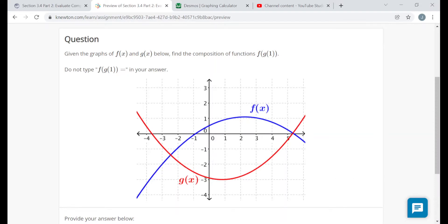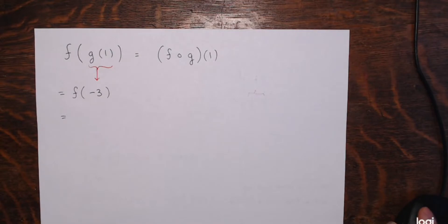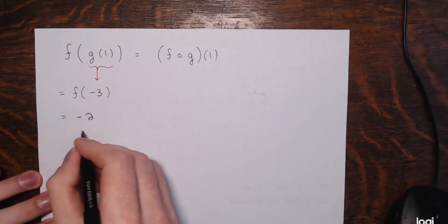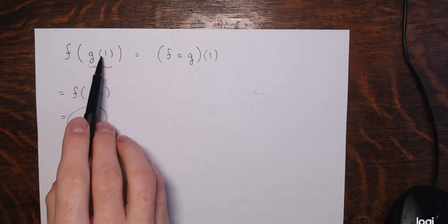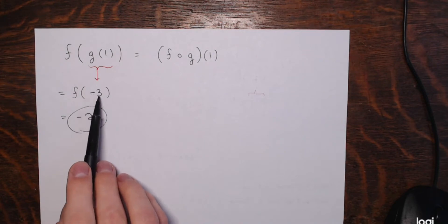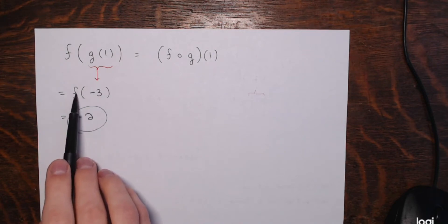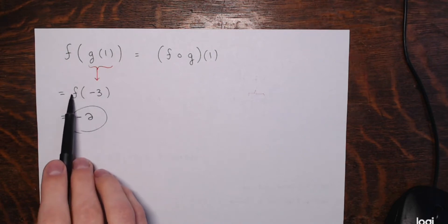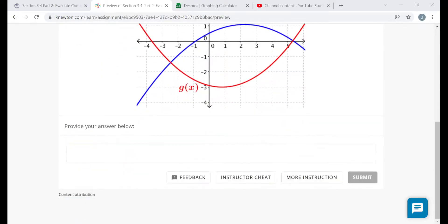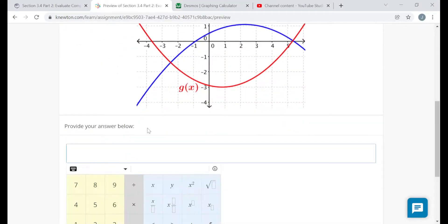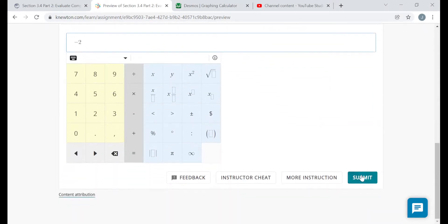What's f of negative 3? I go to negative 3 on the x-axis and go to the f graph — the blue graph — and I get an output of negative 2. That's the final step in this composition: the output is negative 2, and that's what they want. So I plug 1 into g, get negative 3, then plug that into f and get my final output of negative 2. I just type that final output — negative 2 — and submit.